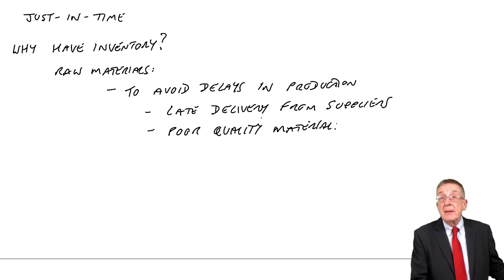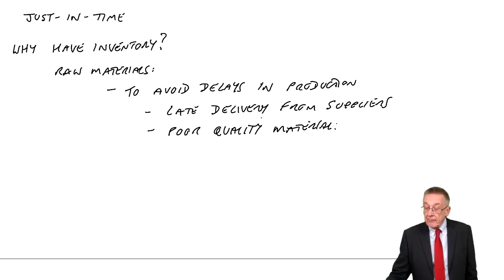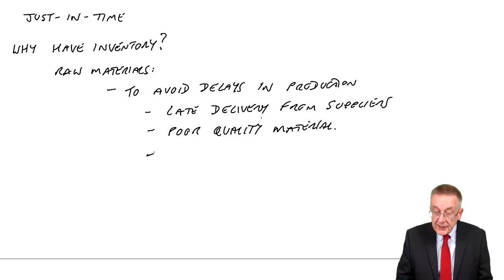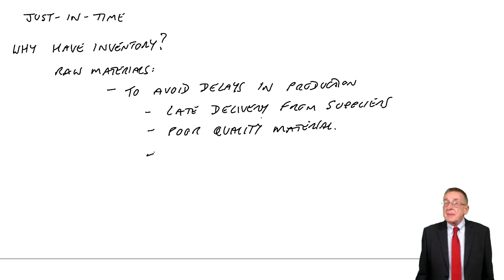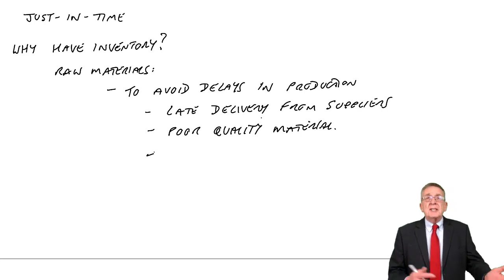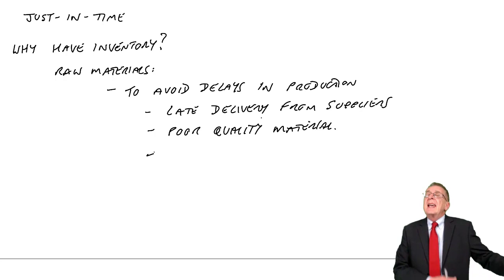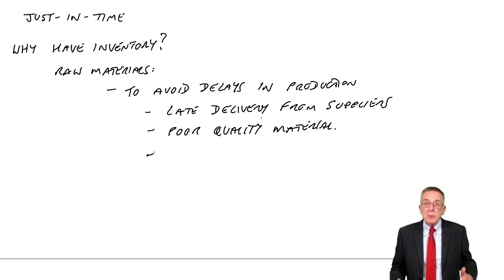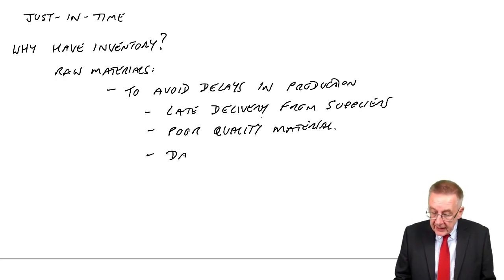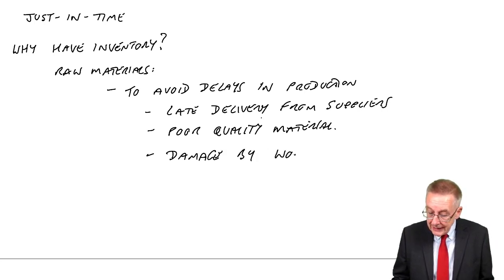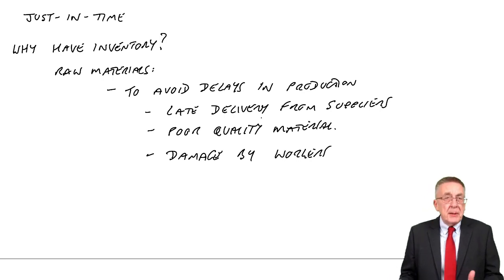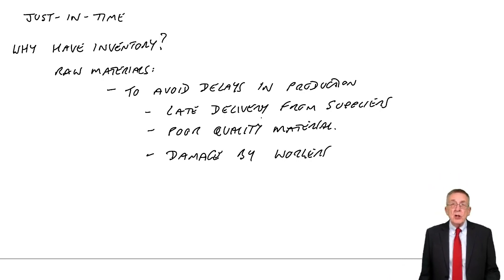While we're waiting, if we've no inventory, production stops. If we've got inventory, we can carry on with the rest of the material. A third reason: perhaps our workers damage the wood — they regularly cut it the wrong size and it has to be thrown away. We can get another piece of wood, provided we've got inventory. So damage by our workers. That's the real reason you would carry an inventory of raw materials — to be safe.